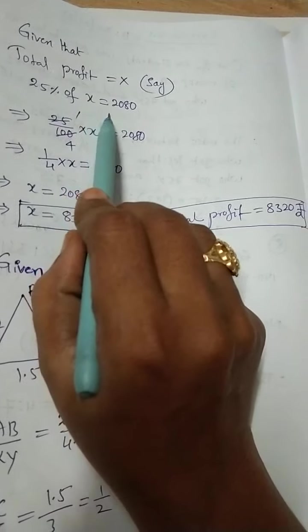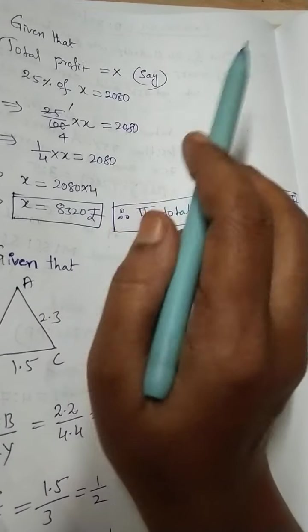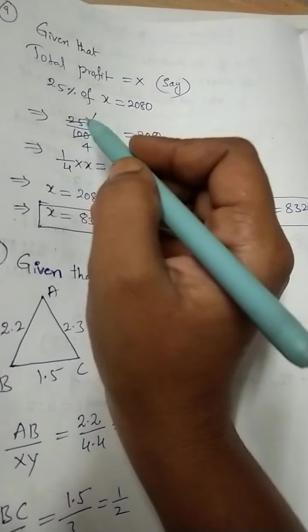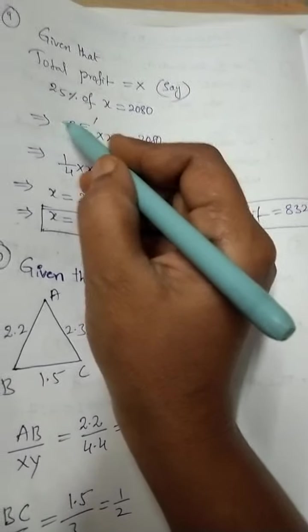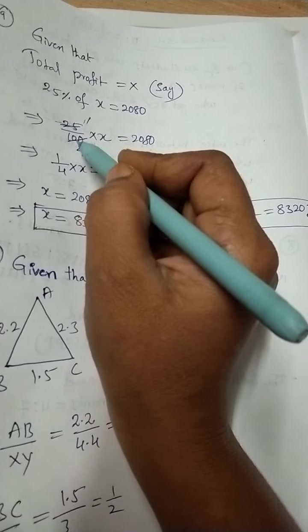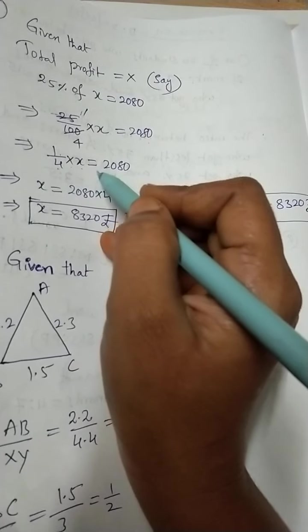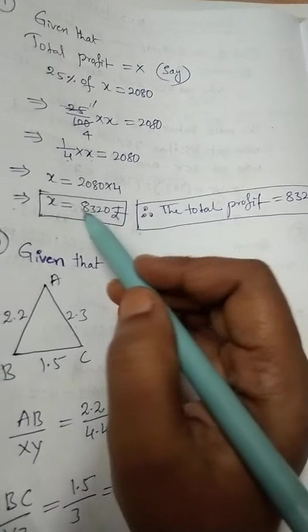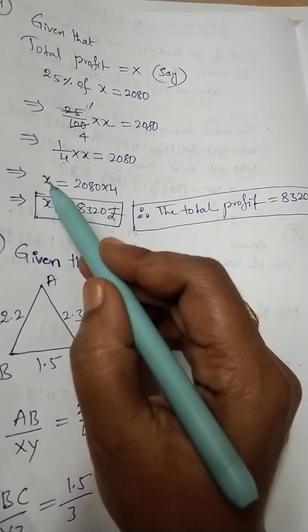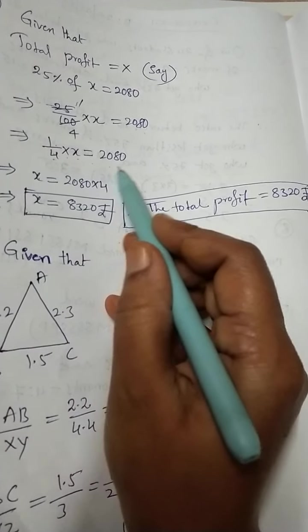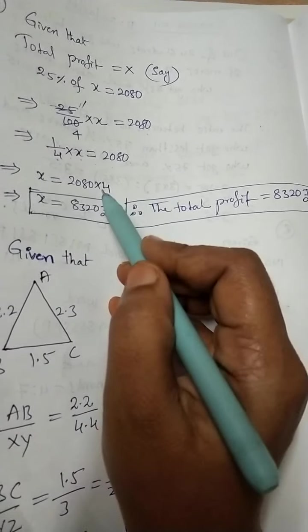We should remove the percentage symbol, then we can write divided by 100. So 25 by 100 into X is equal to 2080 rupees. Now we can do the cancellation with the 25 table: 25 ones are 25, fours are 100. 1 by 4 into X is equal to 2080. Now X is equal to, transpose of division will give us multiplication. So if you do the multiplication, you will get 8320 rupees.